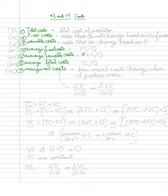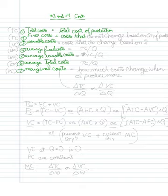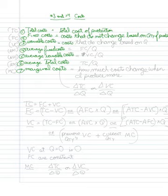Let's start out with total costs. Total costs, as the term implies, are your total costs — the total cost of production. That becomes a little bit easier to understand if we think about it in terms of fixed costs. Fixed costs are costs that do not change based on quantity of production. Variable costs are costs that do change based on quantity.